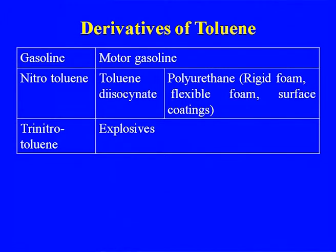Toluene diisocyanate (TDI), derived from nitrotoluene, is used for polyurethane manufacture including rigid foam, flexible foam, and surface coatings. With the coming of catalytic reforming plants, more and more toluene became available, making TNT and other explosives important derivatives of toluene.